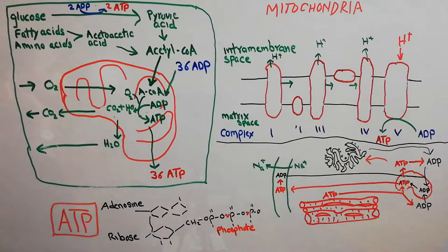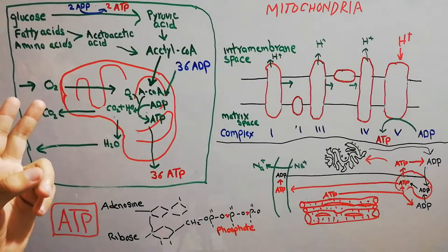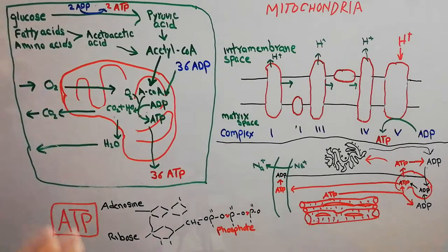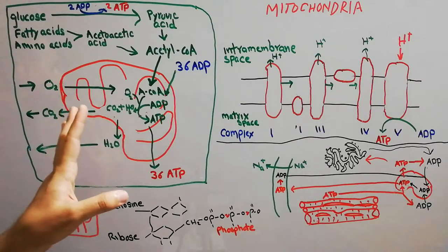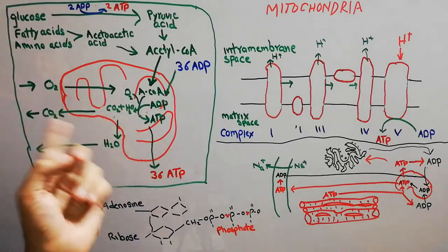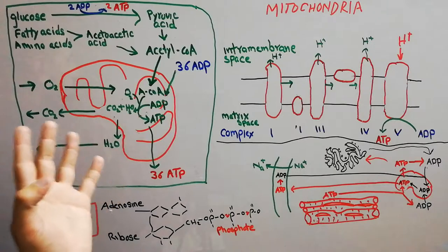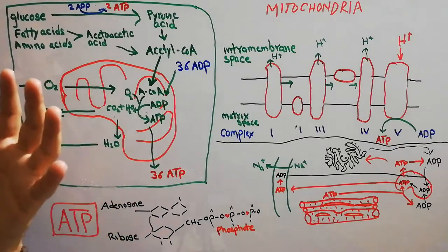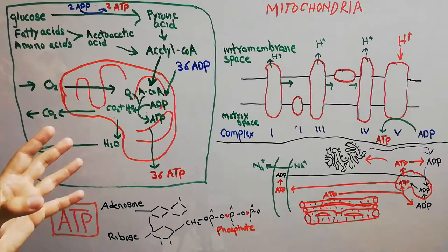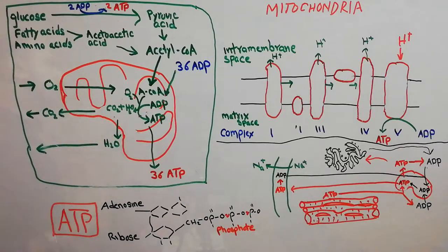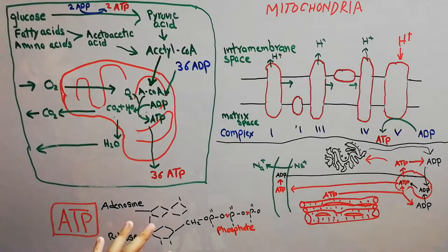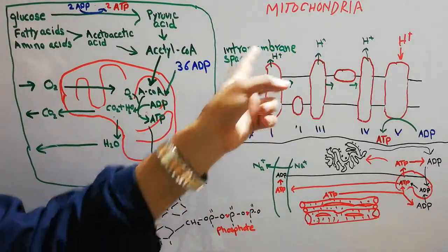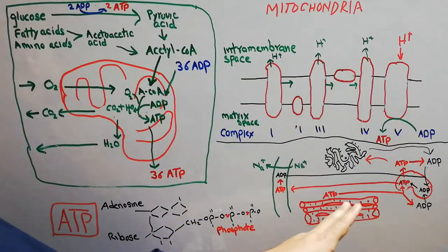Mitochondria is different from other cell organelles in that it contains its own DNA. No other cell organelle — like the endoplasmic reticulum or Golgi apparatus — contains nucleic acid. It is the only organelle which contains its own nuclear material or DNA, which helps in the production of proteins or enzymes utilized in the conversion of food into energy. In this lecture we will discuss four points: the structure and function of mitochondria, the structure of ATP, the mechanism of ATP production, and the functions of ATP.